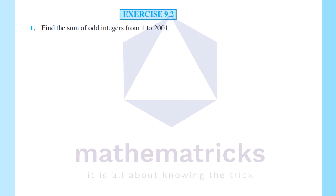First question: Find the sum of odd integers from 1 to 2001.